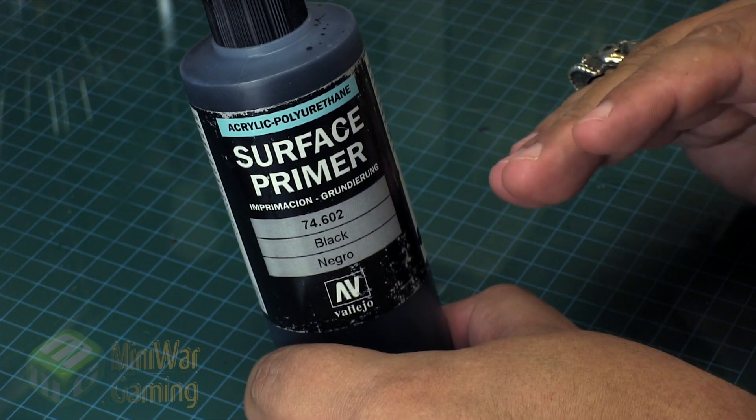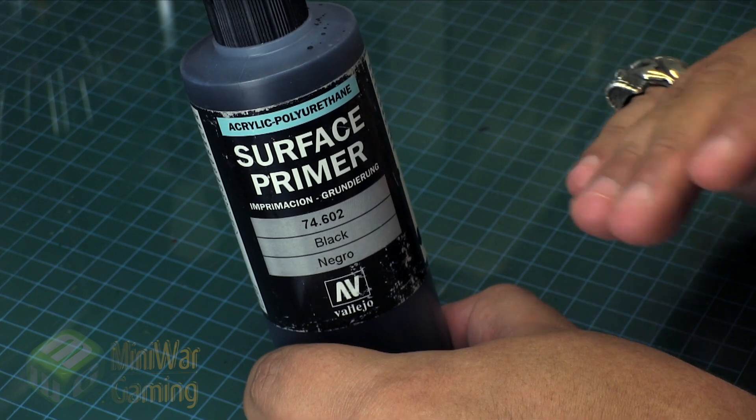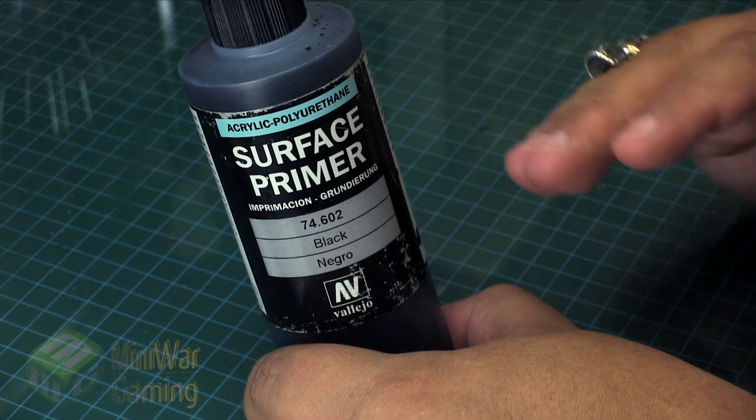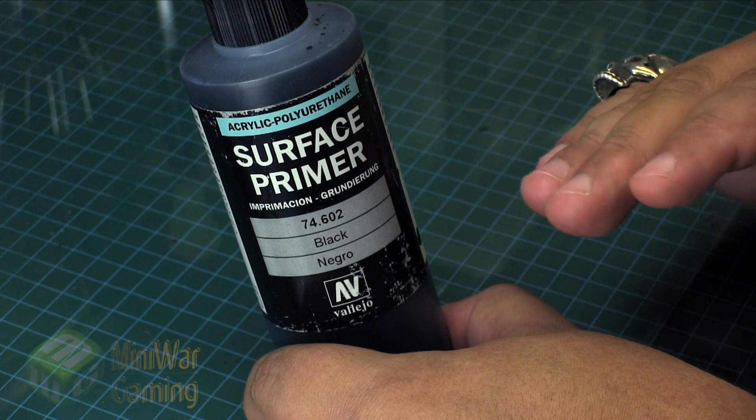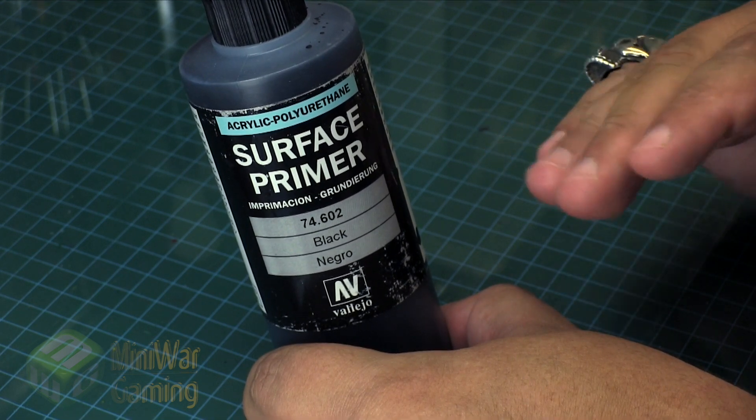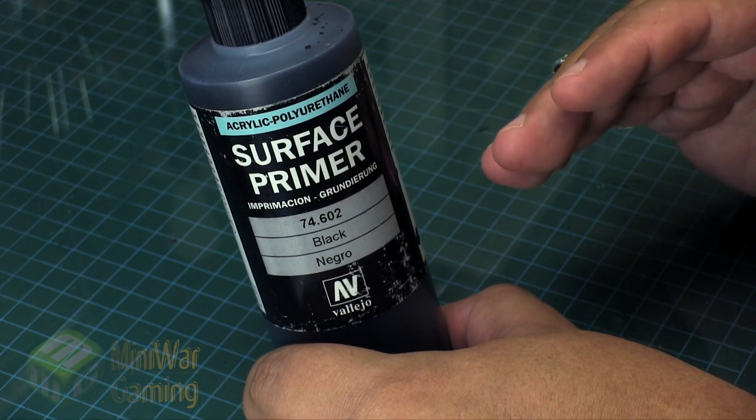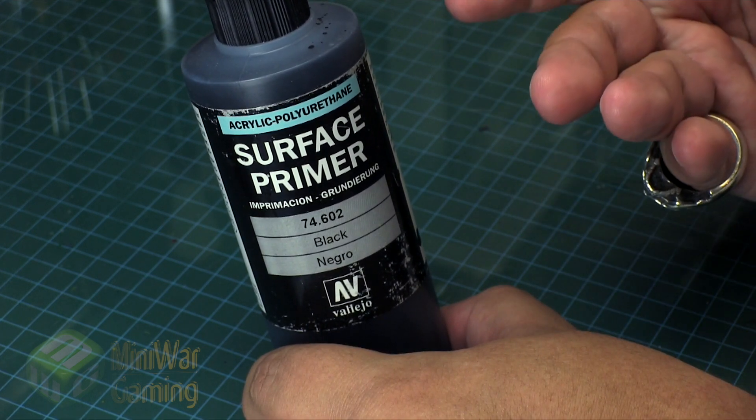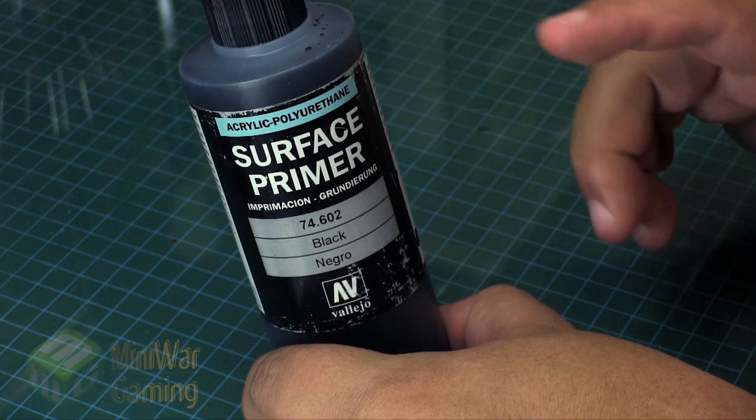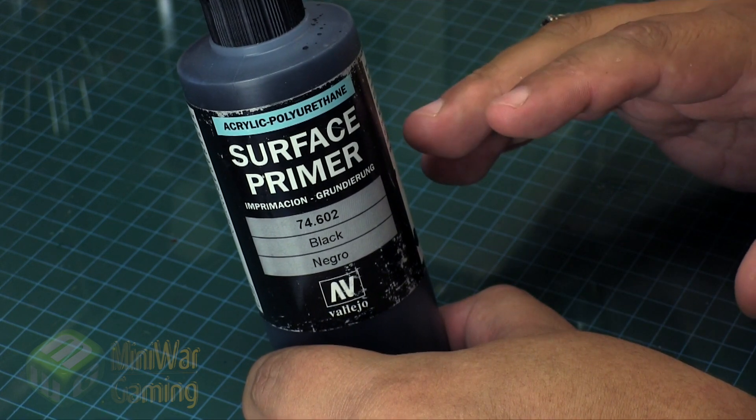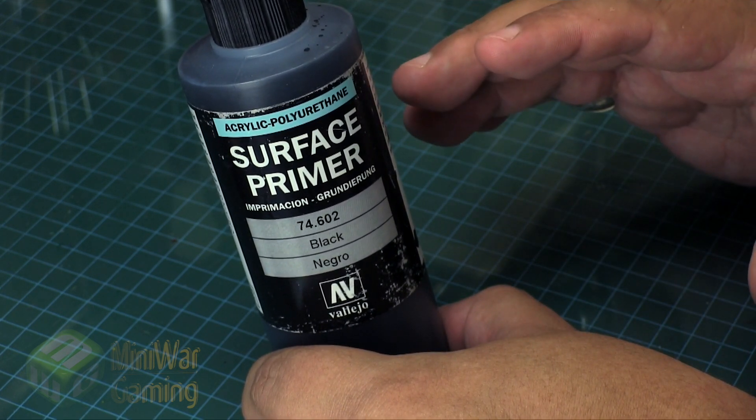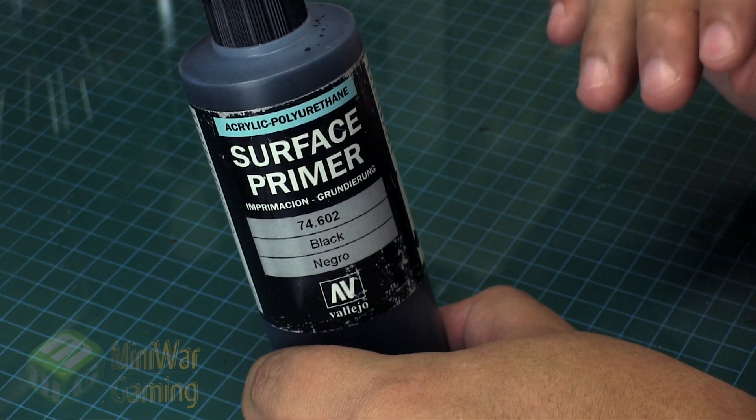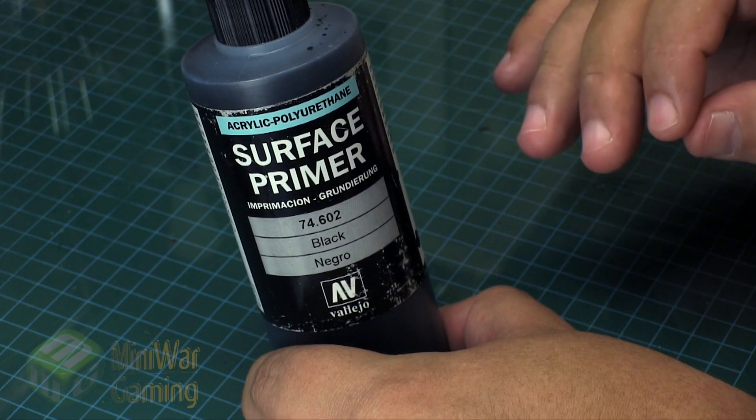When you are dealing with plastic or metal, the tendency is you end up spraying on this primer until basically you see nothing of the model material underneath. For example, if it's plastic you see that light gray; if it's metal you see the shining metal. People tend to spray on until you can't see any of that, and that's not entirely necessary.